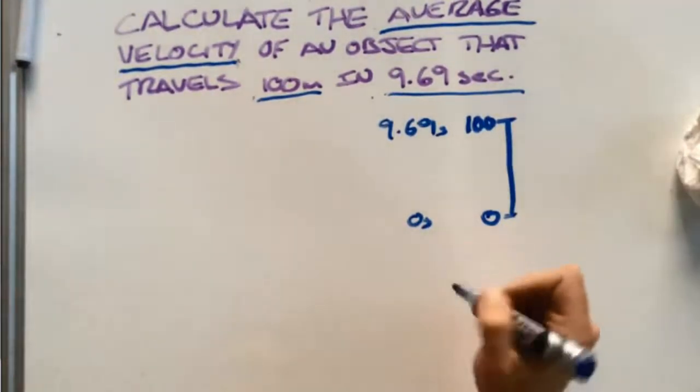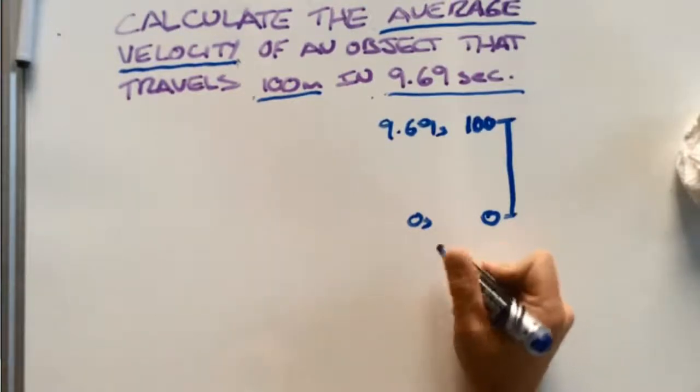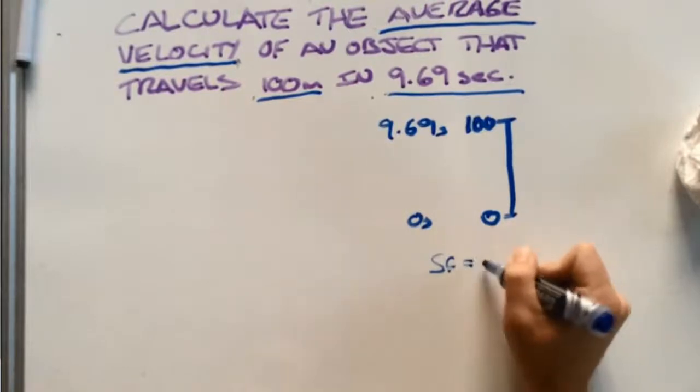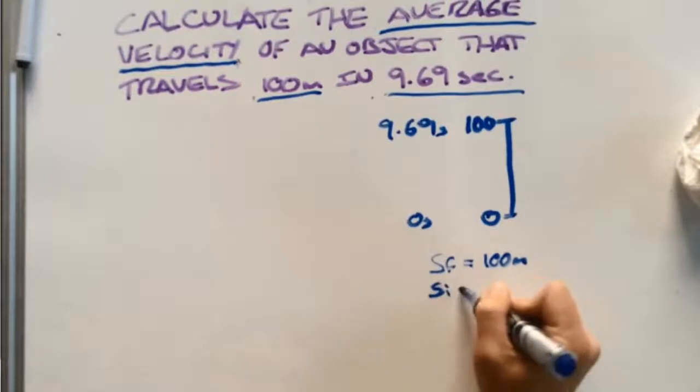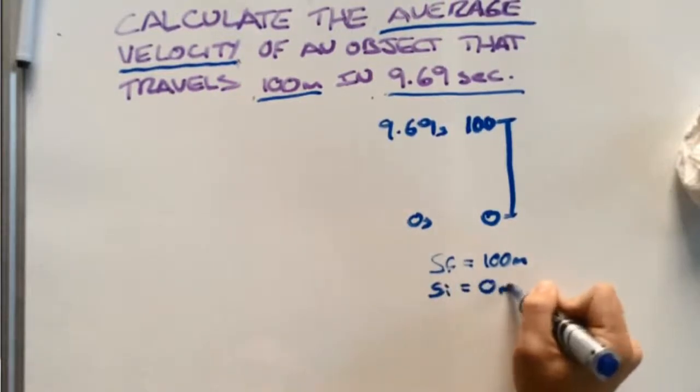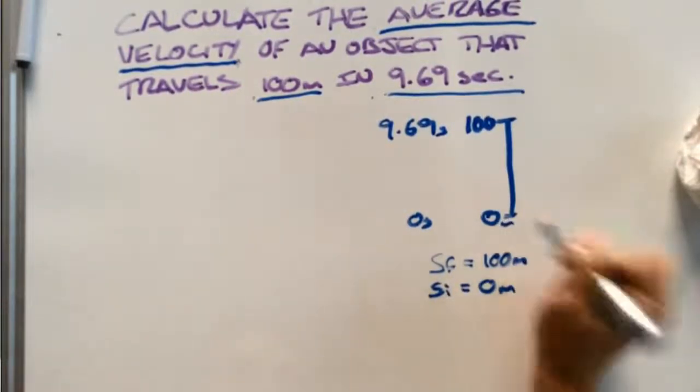So what we have now is our final displacement, which is equal to 100 meters. Our initial displacement is going to equal zero, as we started from zero meters.